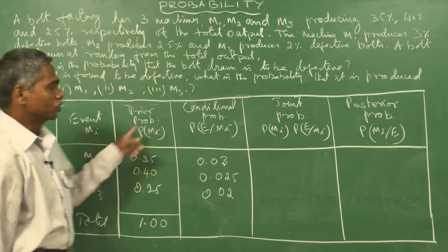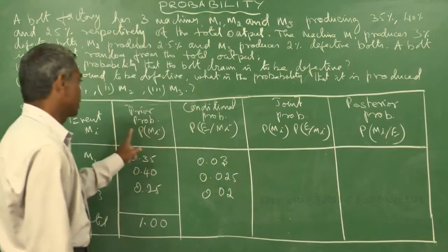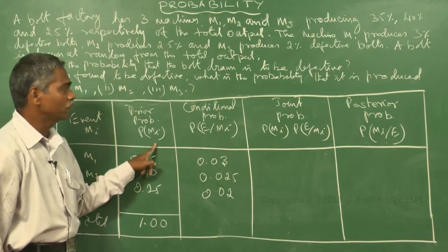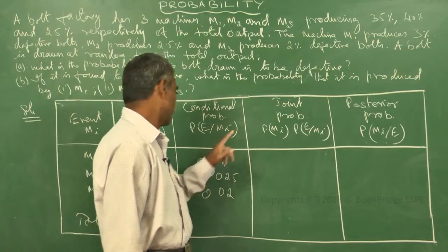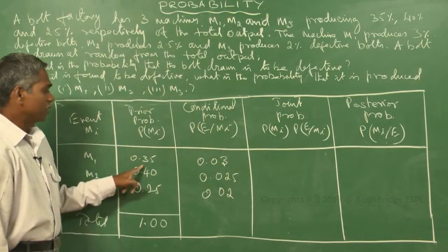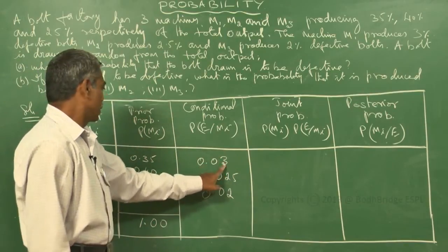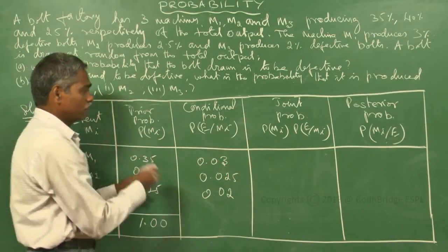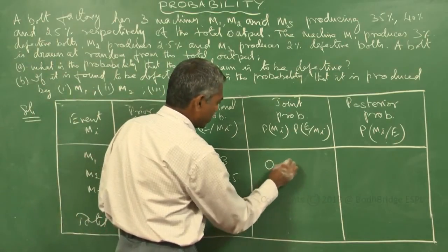Now come to joint probability. Joint probability is the product of prior probability and conditional probability: P(Mi) × P(E | Mi). For M1: 0.35 × 0.03 = 0.0105.